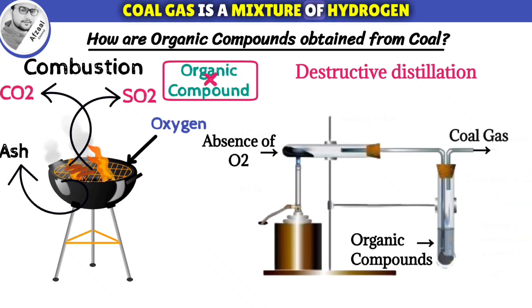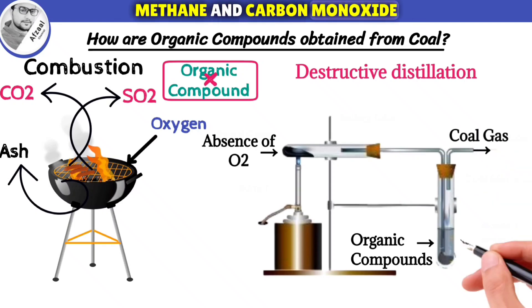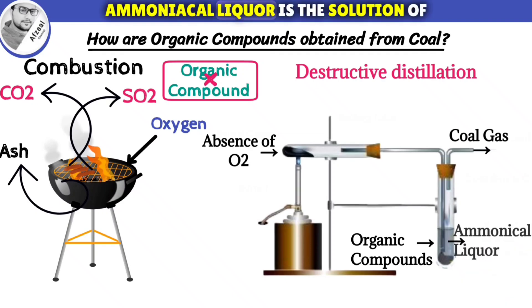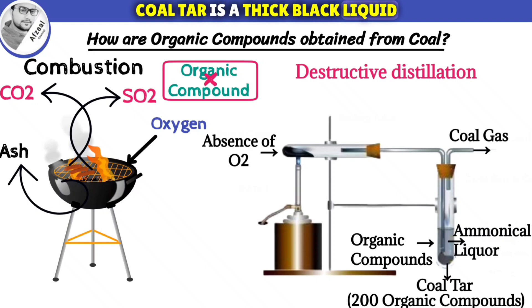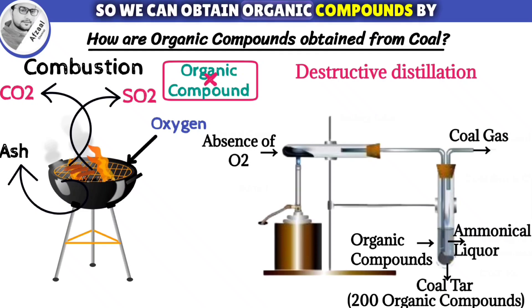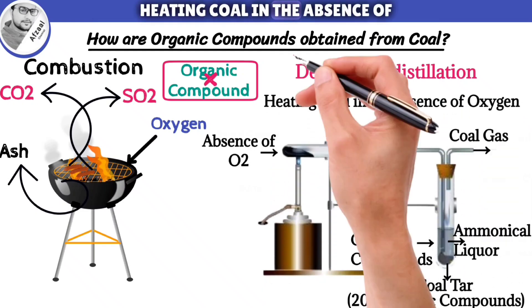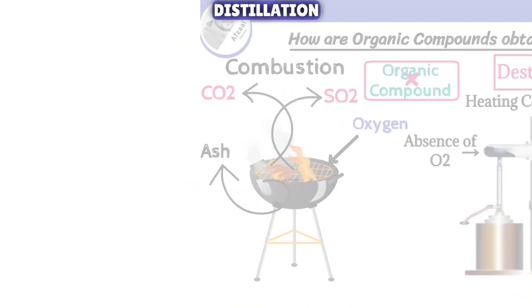Coal gas is a mixture of hydrogen, methane and carbon monoxide. Ammoniacal liquor is a solution of ammonia gas in water. Coal tar is a thick black liquid. It is a mixture of more than 200 different organic compounds. So we can obtain organic compounds by heating coal in the absence of oxygen, known as destructive distillation.